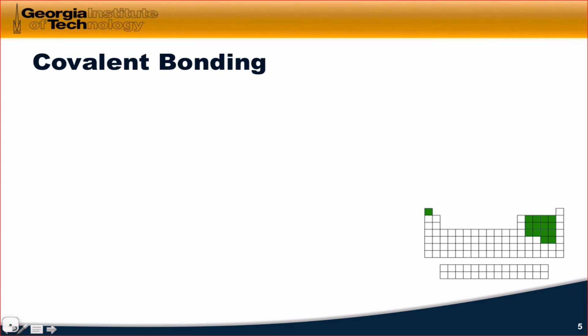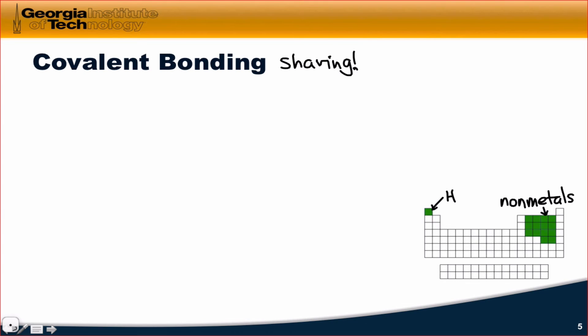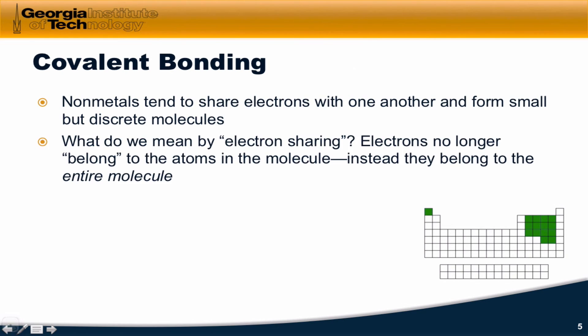Covalent bonding involves, for the most part, only the nonmetals and hydrogen. So, I've highlighted in green here the nonmetals within the main group on the right-hand side of the periodic table. And this is hydrogen over here. These are the elements that are most commonly involved in covalent bonding, which, remember, involves electron sharing. Not the transfer of electrons, but electron sharing.